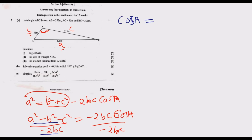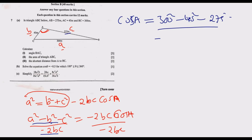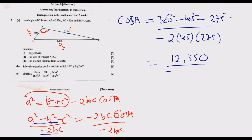Now we substitute: a is BC = 300, so a squared = 300 squared; b squared = 45 squared; c squared = 275 squared. The denominator is negative 2 multiplied by 45 multiplied by 275. On the numerator, when we finalize, we get 12,350 (approximately). On the denominator we get negative 24,750.